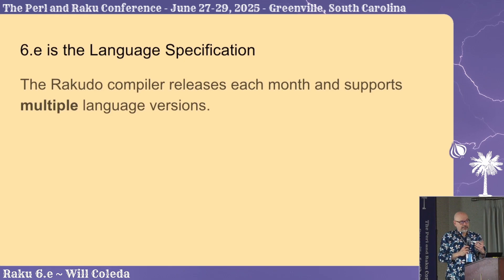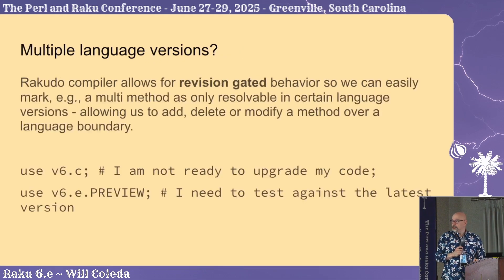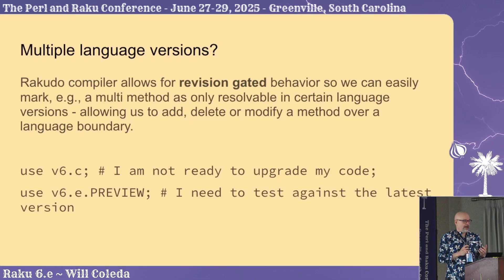We're going to release a version of the spec. The compiler is coming out every month, and you can already run a bunch of this stuff in the current version of the compiler. You just say — I have it on the next slide — 'use 6e preview', and that will get you anything that's already available that's been written in the compiler. We're not going to drop everything all at once.